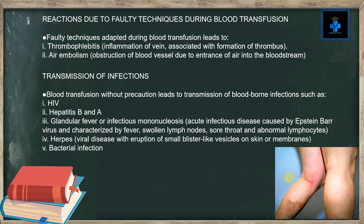Blood transfusion without precautions can lead to transmission of blood-borne infections such as HIV, hepatitis B, and glandular fever or infectious mononucleosis — an acute infectious disease caused by Epstein-Barr virus, characterized by fever, swollen lymph nodes, sore throat, and abnormal lymphocytes. Number four, herpes — a viral disease with eruption of small blister-like vesicles on skin or mucous membranes. Number five, bacterial infection.